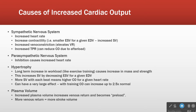Plasma volume: anything that increases plasma volume will increase venous return. Another name for venous return is preload. We talked about afterload — what you have to push against. Preload is what you have to push with; it's what the heart received from the circulation that it can use to push out. The greater the venous return, the greater the preload, and more venous return equals more stroke volume.